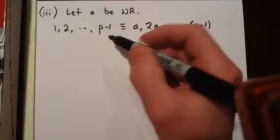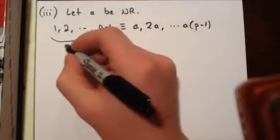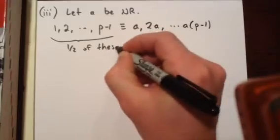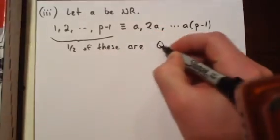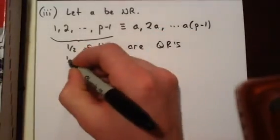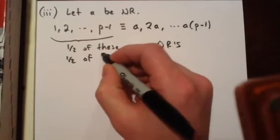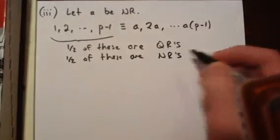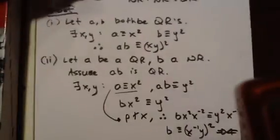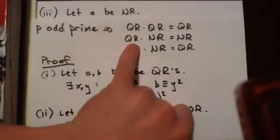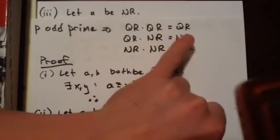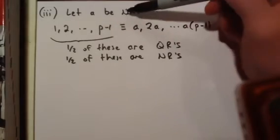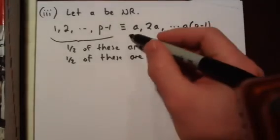And those lists are congruent mod P. And we also know that from a previous result, that one half of these are quadratic residues, and the other half are non-residues. And from part 2, we proved that a quadratic residue times a non-quadratic residue is a non-quadratic residue.